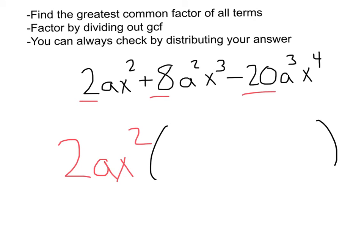Well, I took the 2 out, I took an a out, and I took out an x squared. Since everything's being divided out, I'm going to be left with a 1. Here I've got an 8, I took the 2 out from the 8, that's going to leave us with plus 4. a squared, I took out an a, we're left with 1a.